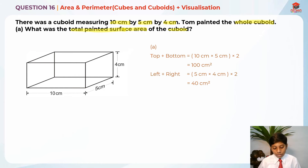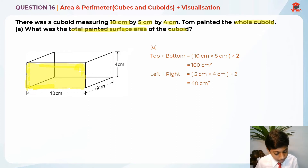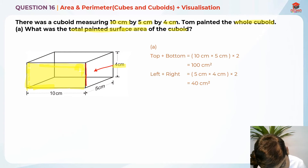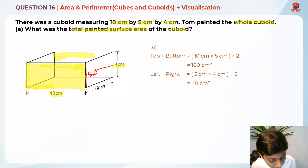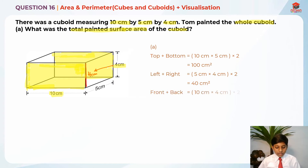Now what's left is the front and the back. Let me highlight it — this is the front. We have the 4 cm dimension here, so the area of the front is 10 cm times 4 cm. Front plus back is 10 cm × 4 cm × 2, which gives us 80 cm².